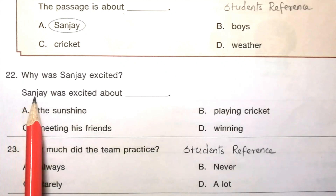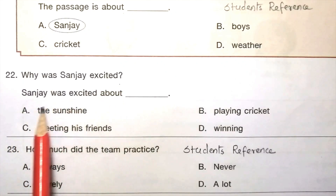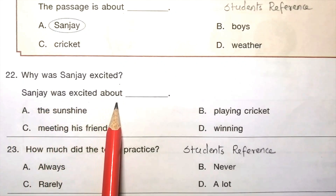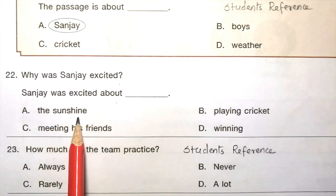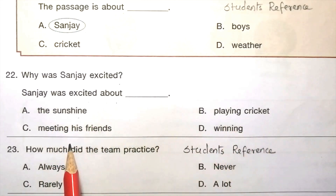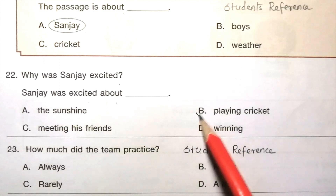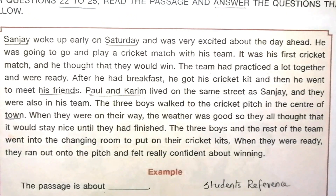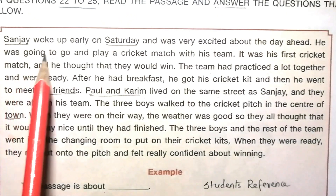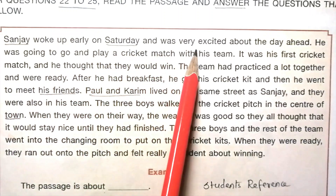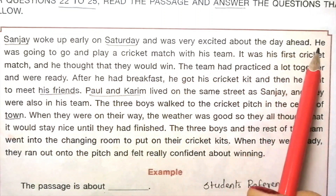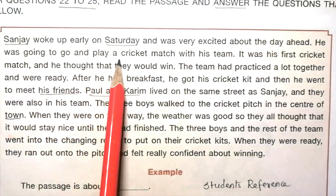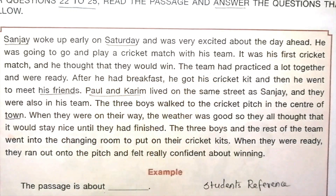Question 22: Why was Sanjay excited? Options: the sunshine, playing cricket, meeting his friends, winning. The answer is B, playing cricket. The answer is given in the passage: Sanjay woke up early on Saturday and was very excited about the day ahead — he was going to go and play a cricket match with his team.